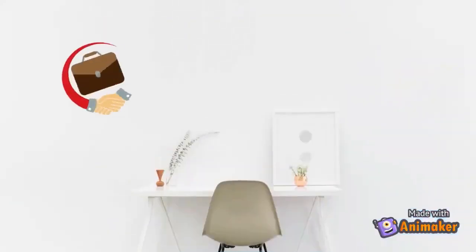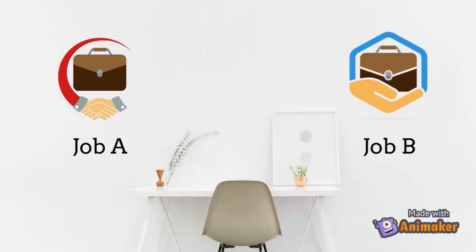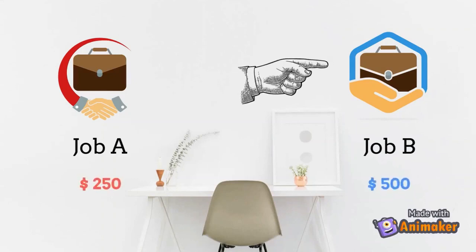When there are two jobs that need to be finished — for example, Job A and Job B — Job A offers a profit of around $250, while Job B offers a profit of around $500. He will prioritize doing Job B first because it is more profitable than doing Job A.